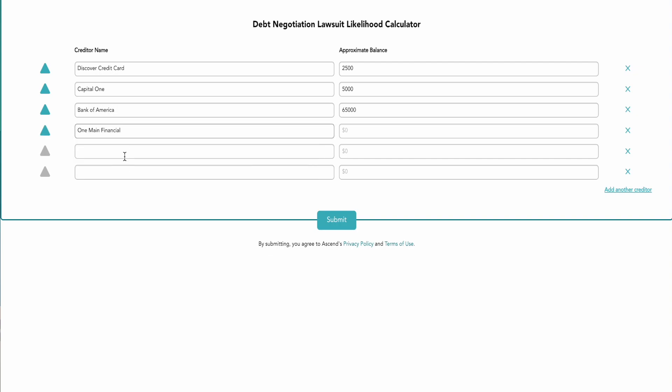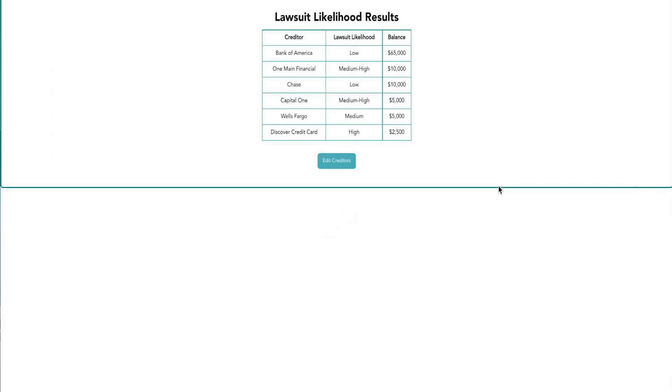So the lawsuit likelihood is one of the most important things to understand. And our debt relief calculator and debt relief insights page helps you kind of determine who your creditors are and what are the chances that you are going to be sued. Because that's really important to understand before you sign a debt relief program. And a lot of companies don't actually get into those type of details.